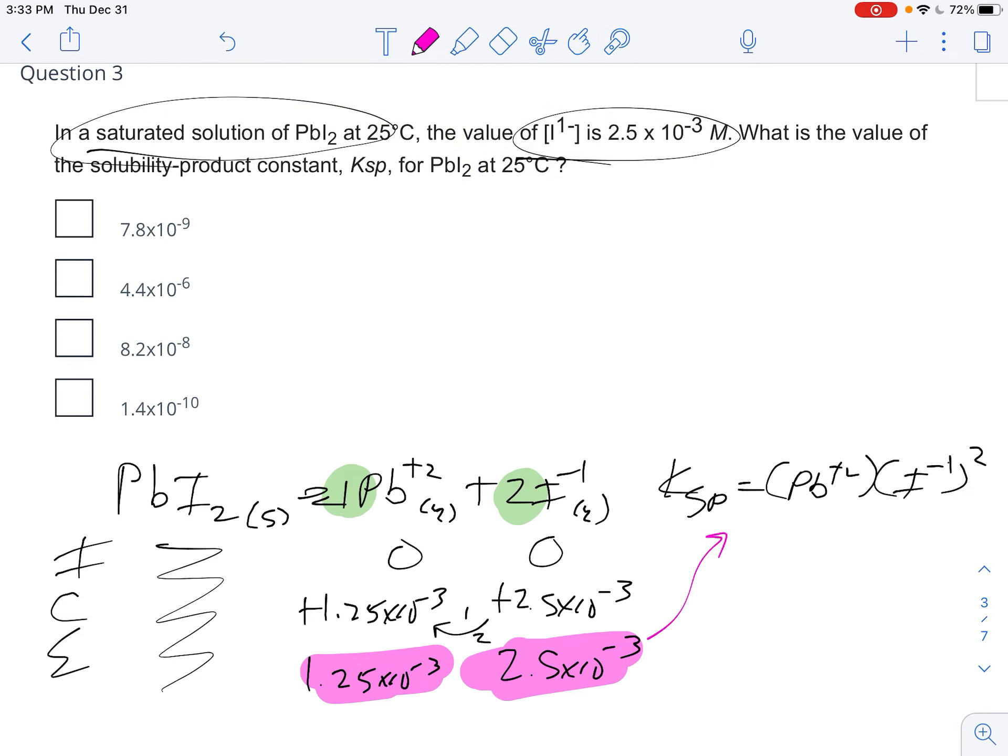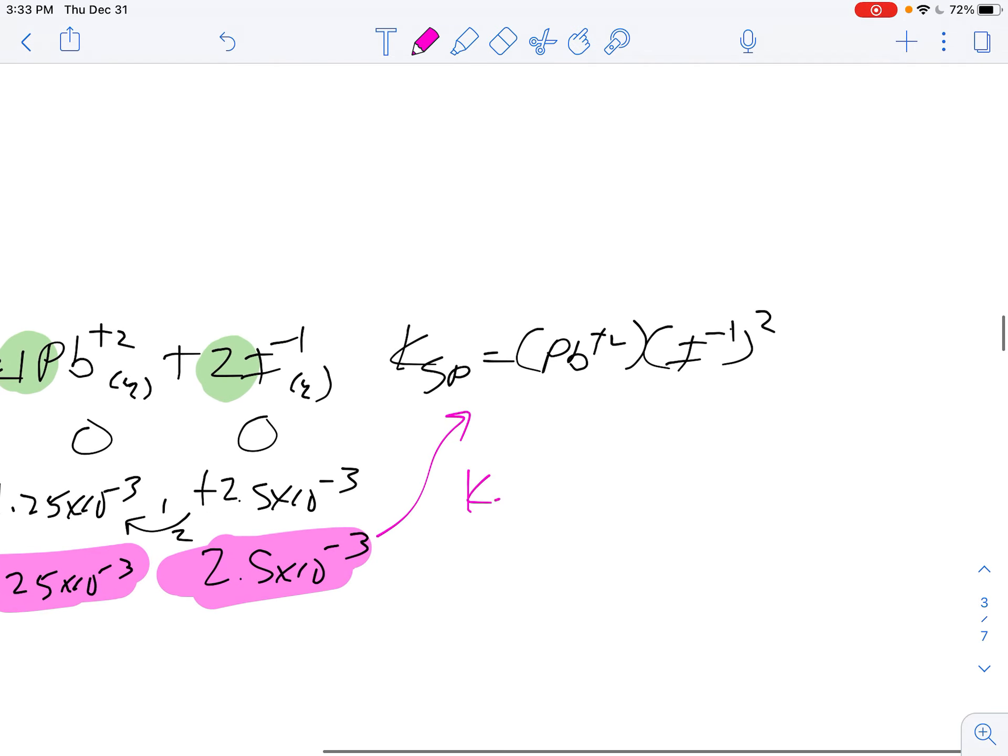And so consequently, my Ksp then is going to be 1.25 times 10 to the negative third times 2.5 times 10 to the negative third squared.